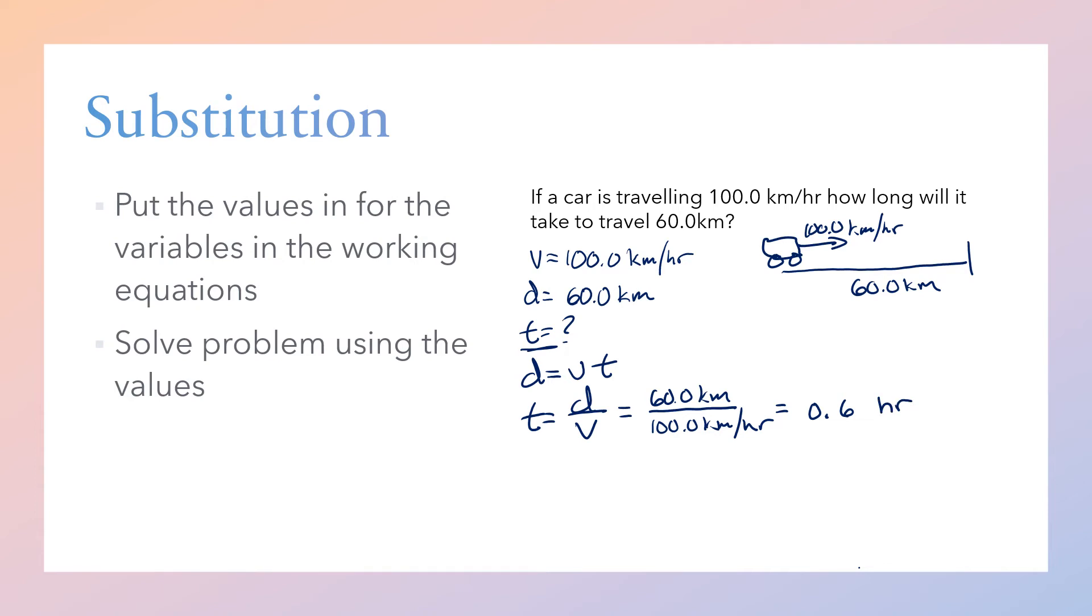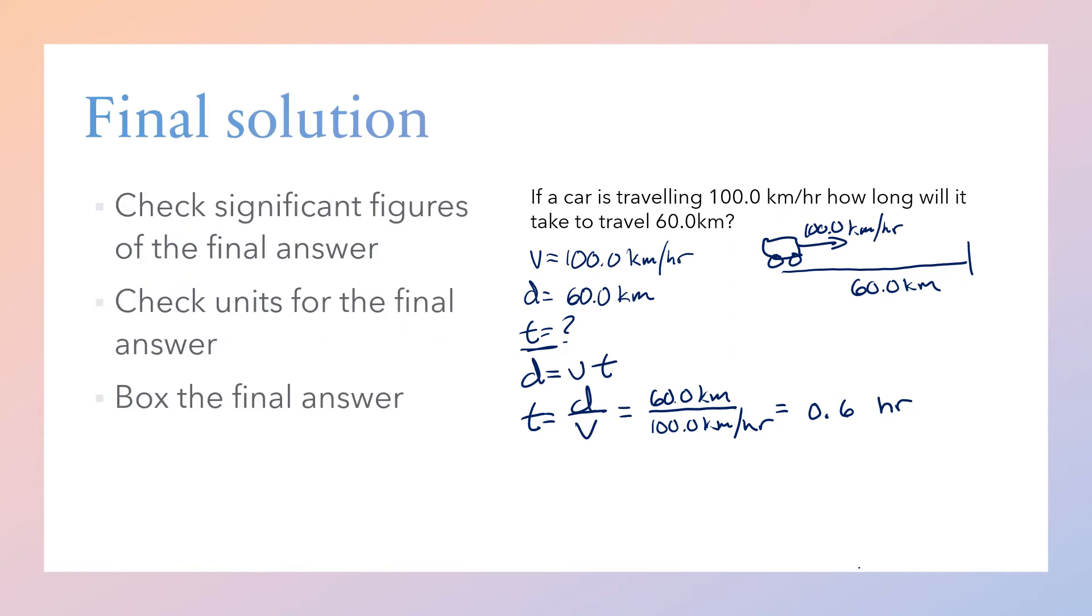Now our final solution—the first thing we want to do is check significant figures of the final answer. 0.6 only has one significant figure; 60.0 has three significant figures; 100.0 has four. We're always going to use the least number of sig figs, so our answer needs to have three. Instead of 0.6, this should be 0.600 hours to make sure we're not losing any significance.